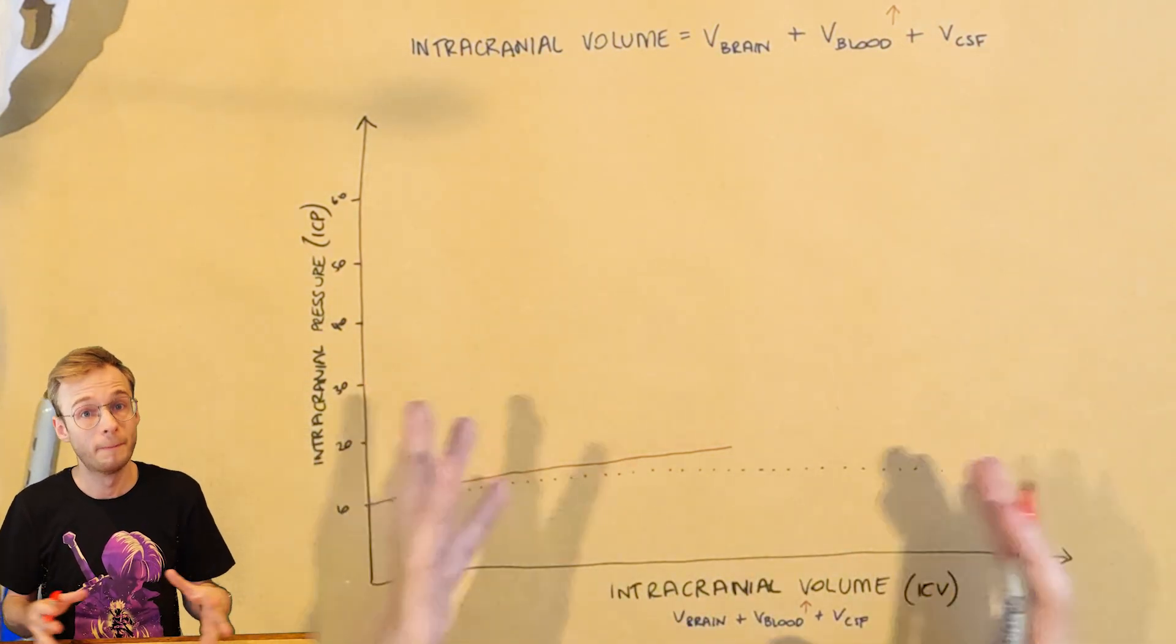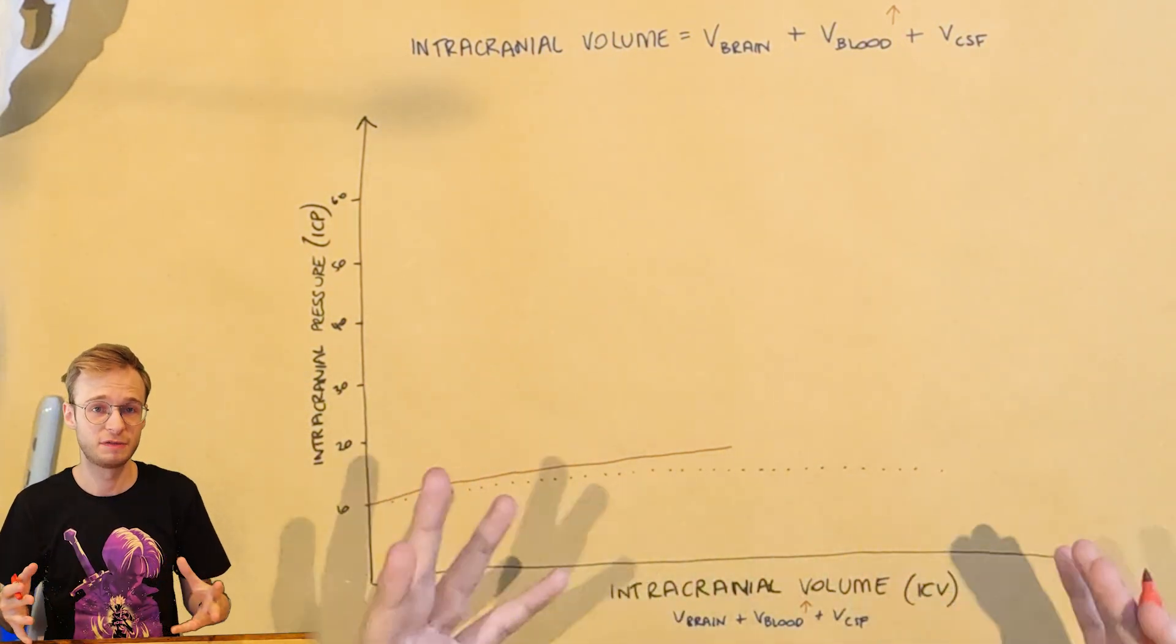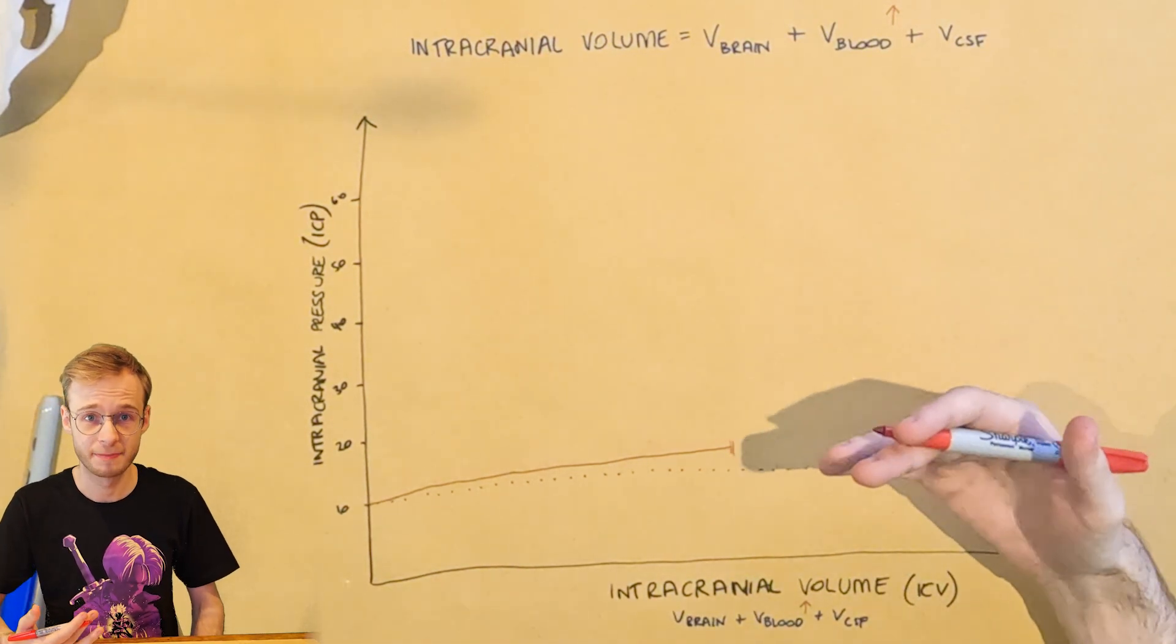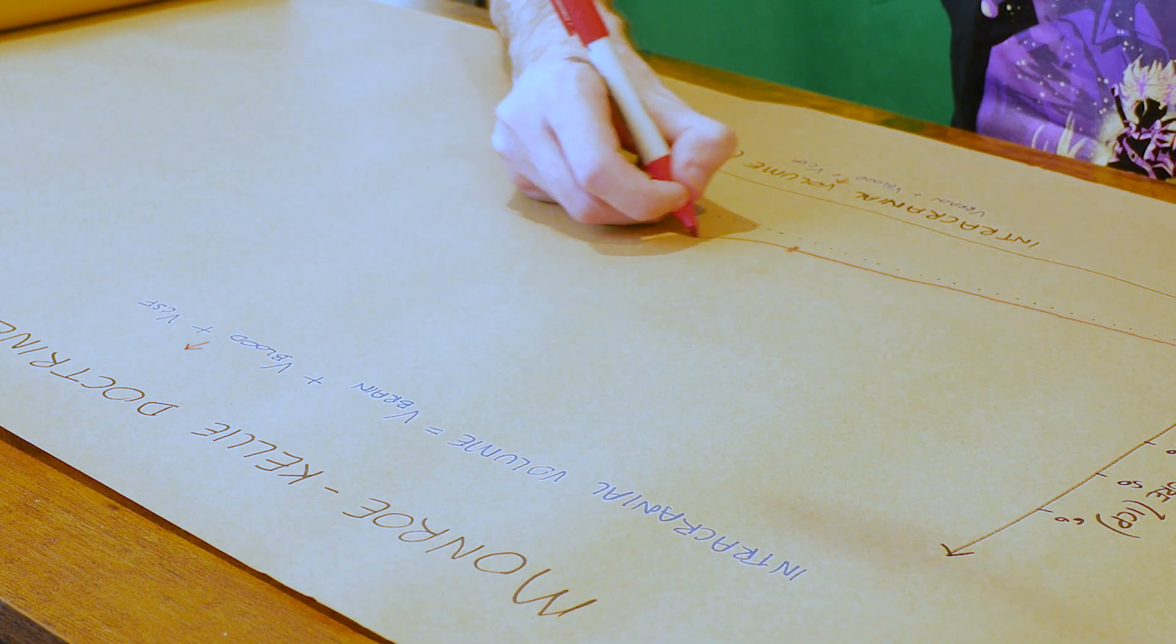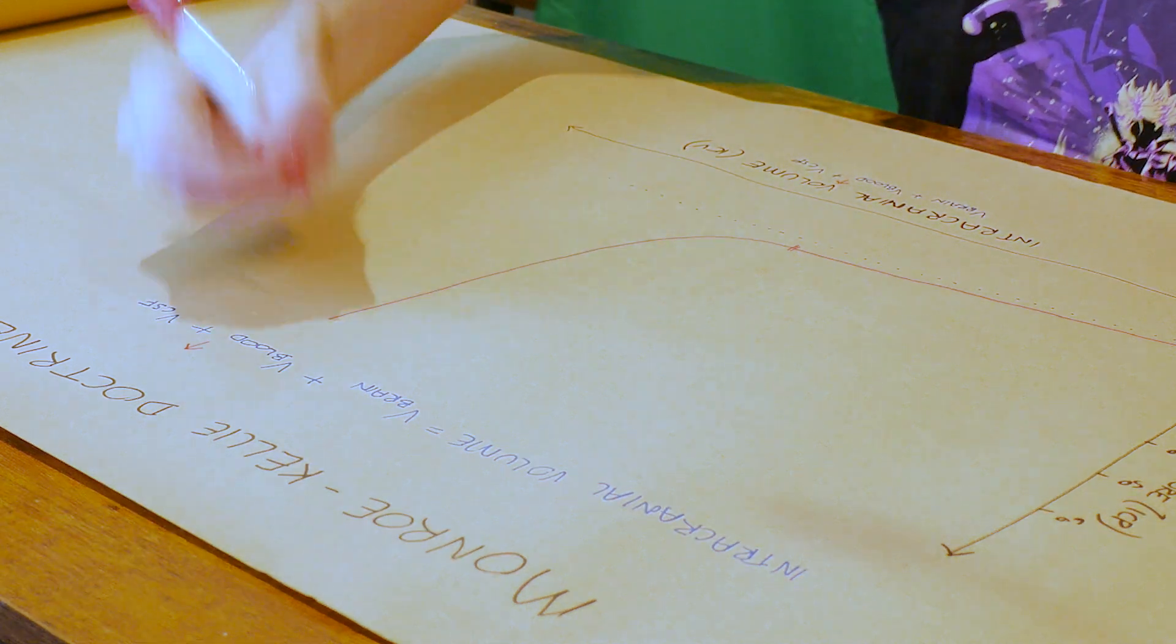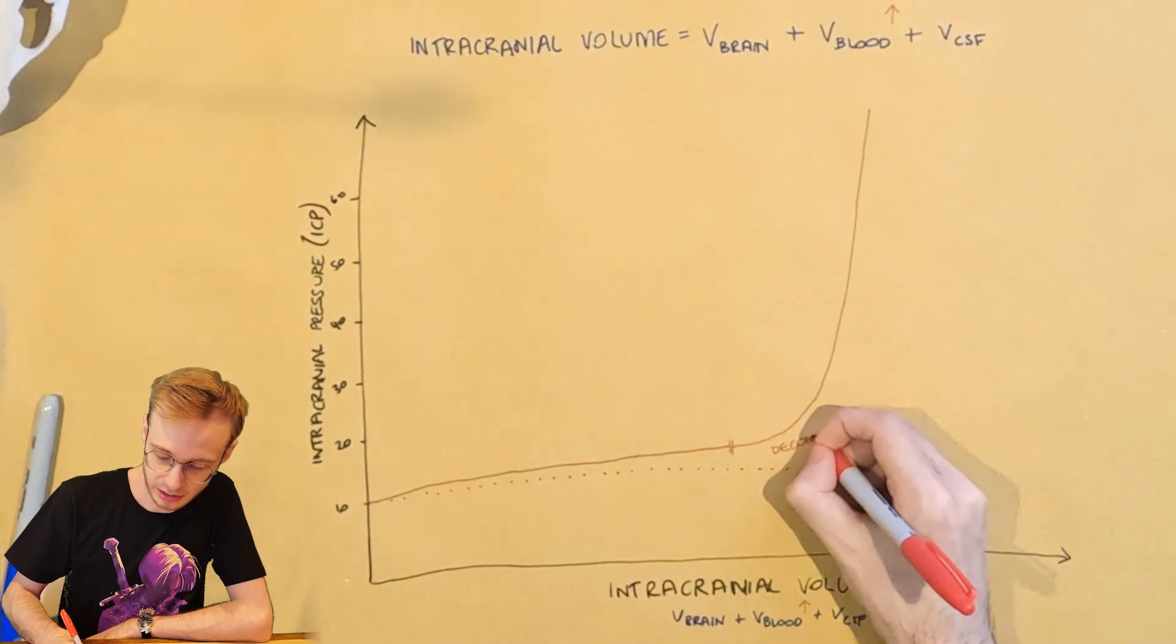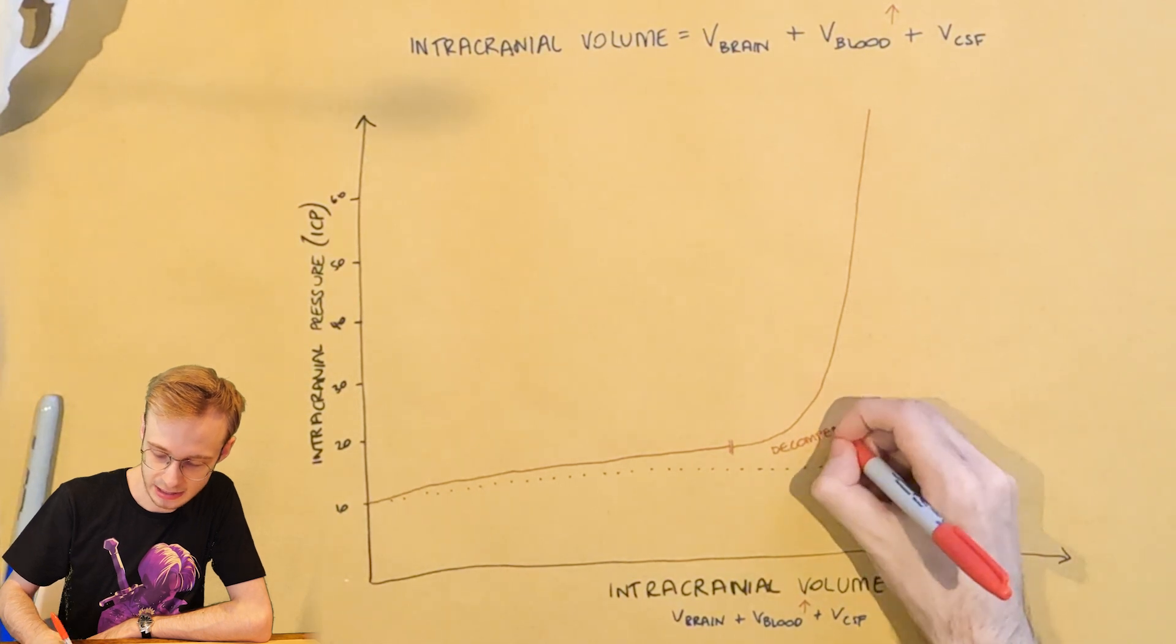This is what we call compensation, or the compensated phase, but there is a limit. And once these compensatory strategies are maxed out, then pressure starts to rise sharply, and we get this. And this is when the patient starts to enter the decompensated phase.